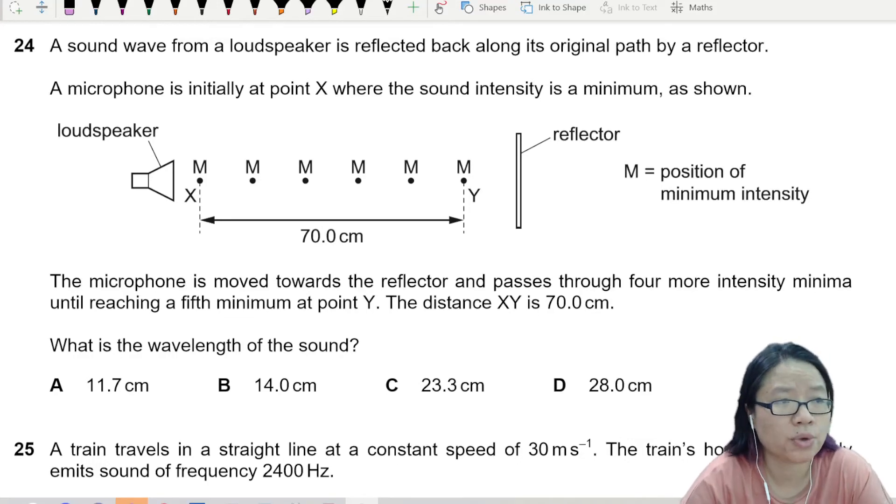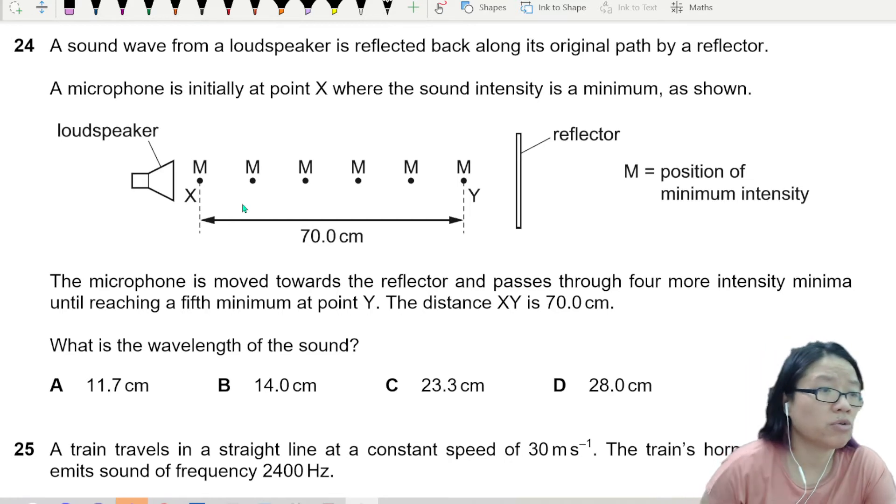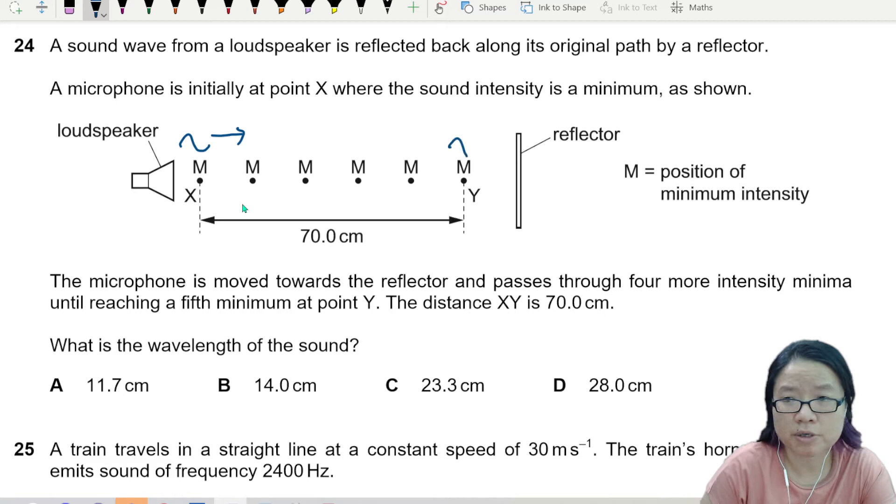Alright, this question, we have a sound wave from a loudspeaker and it's reflected back along its original path by a reflector. So our setup here is that we have a sound wave traveling in this direction. By the time it reaches the reflector here, it will reverse direction this way.